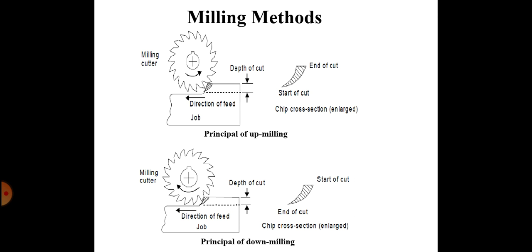Another difference: in up milling, power consumption is more, whereas in down milling power consumption is less. In up milling, surface finish is not good and a rough surface may be generated. In down milling, surface finish is good.